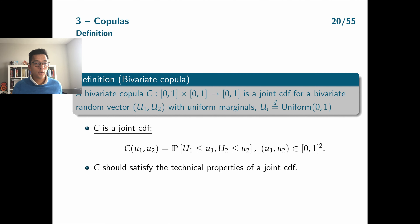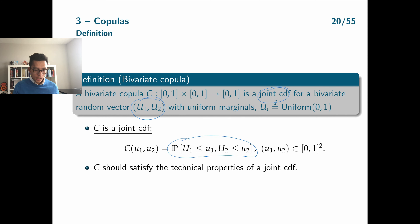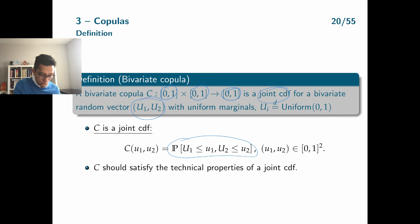We start with the definition of a copula function. A bivariate copula C is a joint CDF for a bivariate random vector (u1, u2), where u1 and u2 are both uniformly distributed. So a copula function takes values in [0,1], and its domain is the unit square [0,1] × [0,1].